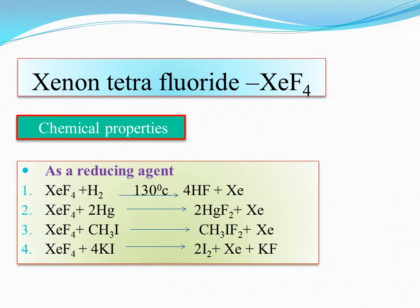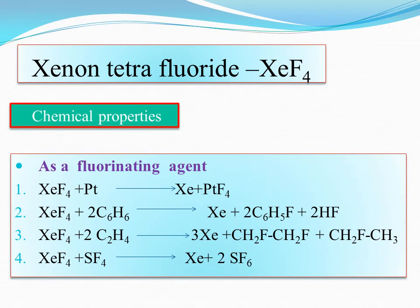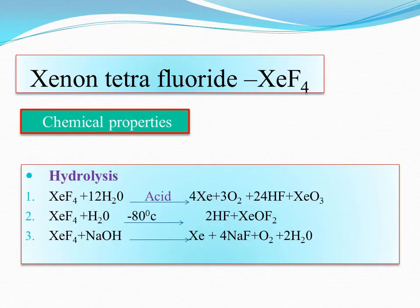Chemical properties of XeF4: it can act as a reducing agent giving HF and Xe, and as a fluorinating agent — fluorinating platinum to PtF6, sulfur to SF4 or SF6, and benzene. It undergoes hydrolysis in acid medium giving xenon, and also undergoes alkali hydrolysis giving back xenon.